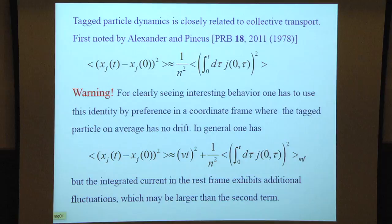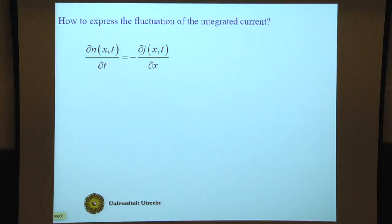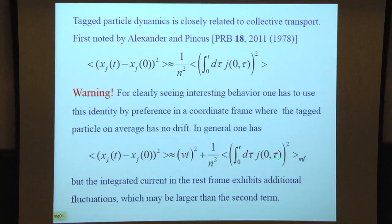In that case, you can translate this as the displacement equals velocity times drift velocity times time plus the integral of the current. But if you look at the integrated current in the rest frame, you get additional fluctuations which may obscure the behavior of the second term.